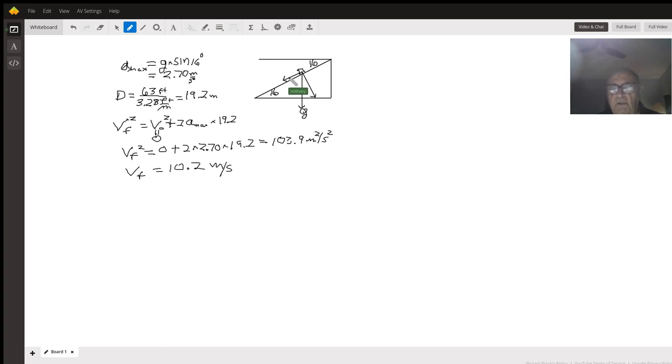It turns out that the parallel one is the acceleration we're interested in. The maximum acceleration is equal to g, acceleration of gravity, times the sine of 16 degrees.